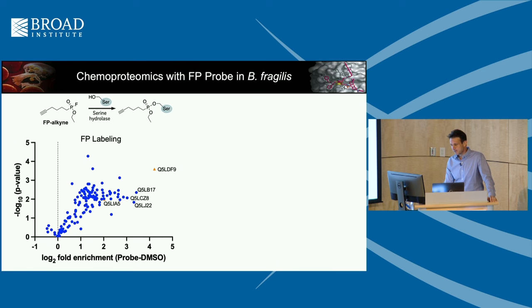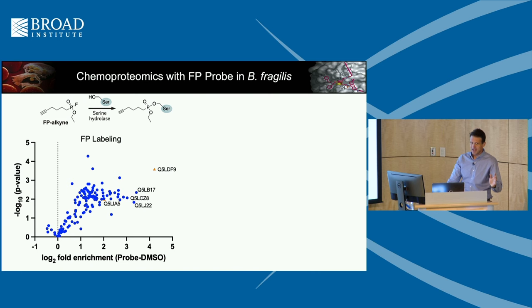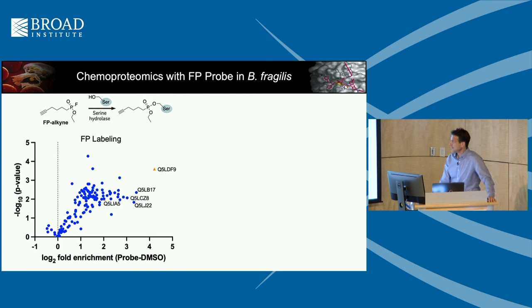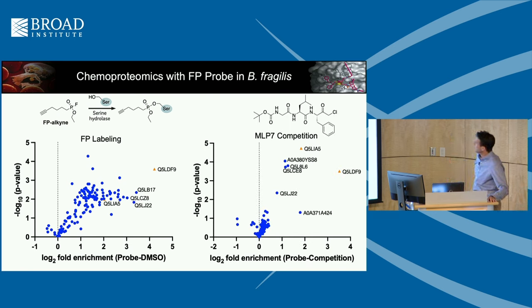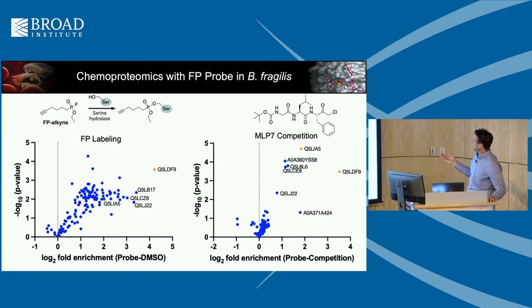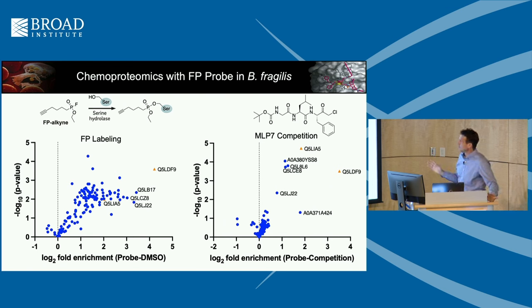Marcus prepared samples for proteomics and we looked at a volcano plot — fold enrichment on the x-axis, p-value on the y-axis. One protein, Q5LDF9, was highly enriched and had a good p-value, making it a likely target. Doing competition with MLP7, Q5LDF9 was the most competed of all targets. A second candidate, Q5LIA5, was also a pretty good candidate. We focused on these two.